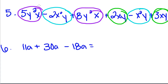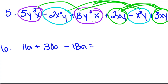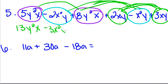Now we're going to add each group of like terms together. 5y squared x plus 8y squared x gives me 13y squared x. Negative 2x squared y minus x squared y gives me negative 3x squared y. And 2xy plus 3xy gives me positive 5xy.